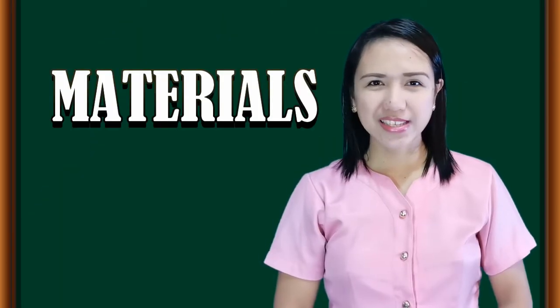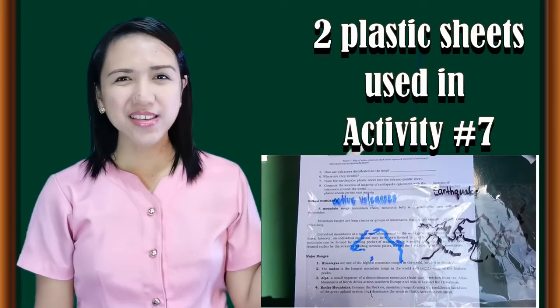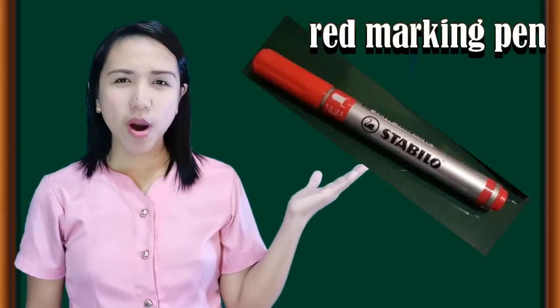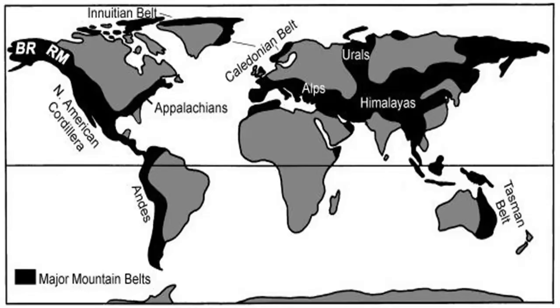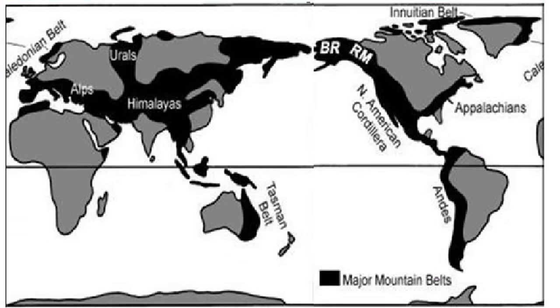We need the following materials: a map of mountain ranges of the world, two pieces of plastic sheets used in Activity No. 7, and a red marking pen. Study the map showing the mountain ranges of the world. Since the map of mountain ranges in the world is presented this way, the teacher will provide a new copy of the map in such a way that it shows the Pacific Ring of Fire to provide ease in tracing later.